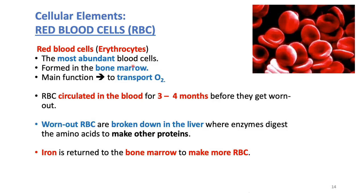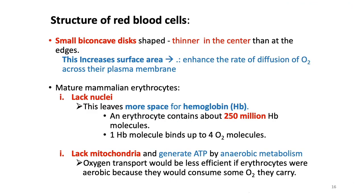Erythrocytes, or red blood cells, are the most abundant blood cells. There are about 25 trillion red blood cells in the 5 liters of blood in the human body. They are formed in bone marrow and their main function is to transport oxygen. Red blood cells circulate in our blood for 3 to 4 months before they get worn out. Once worn out, they are broken down in the liver — enzymes digest them, amino acids are used to make other proteins, and iron is returned to the bone marrow to make more red blood cells.